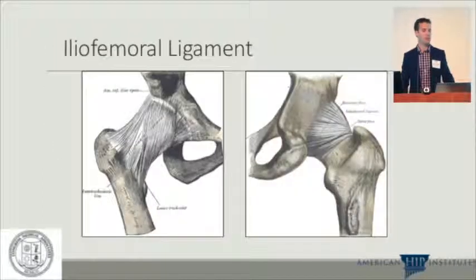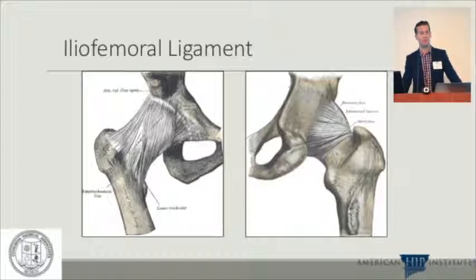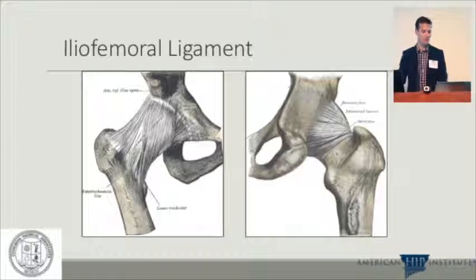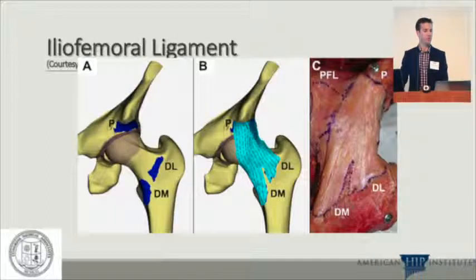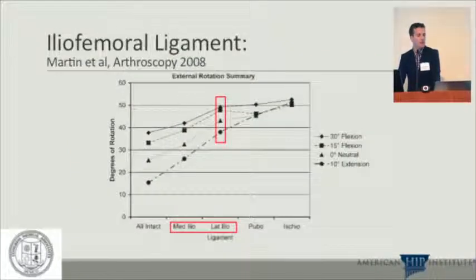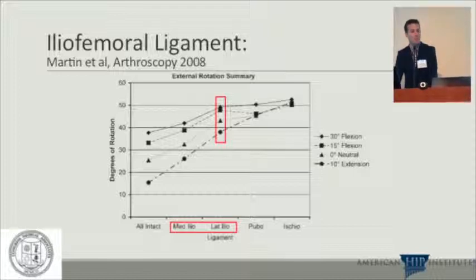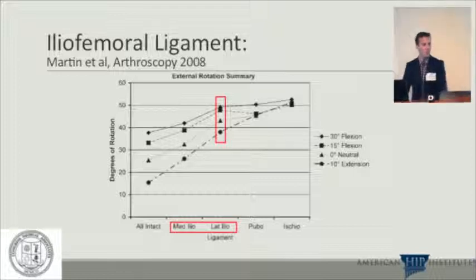Another static factor is the iliofemoral ligament — the ischiofemoral and pubofemoral to a smaller degree — but primarily we're talking about anterior instability, so the iliofemoral ligament is of vital importance. Several papers have described two bands, though arthroscopically it looks like one big band. Hal Martin cut the medial and lateral limbs and showed an increase in external rotation at all degrees of hip flexion. The pubofemoral and ischiofemoral ligaments had much less contribution.